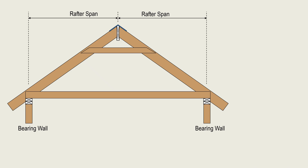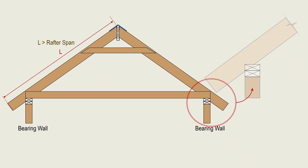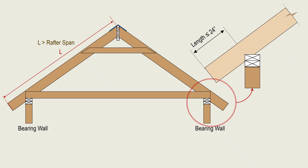The span of a rafter is the horizontal projection of the length of the rafter. When sizing rafters, we measure this horizontal projection from the center line of the exterior bearing wall to the center line of the ridge board. Therefore, for gable-type roofs, the actual length of the rafter is longer than the span because of the slope and because the rafter typically extends beyond the bearing wall. The length of the cantilever beyond the exterior bearing wall should not exceed 24 inches unless designed by a licensed engineer or architect according to accepted engineering practice.